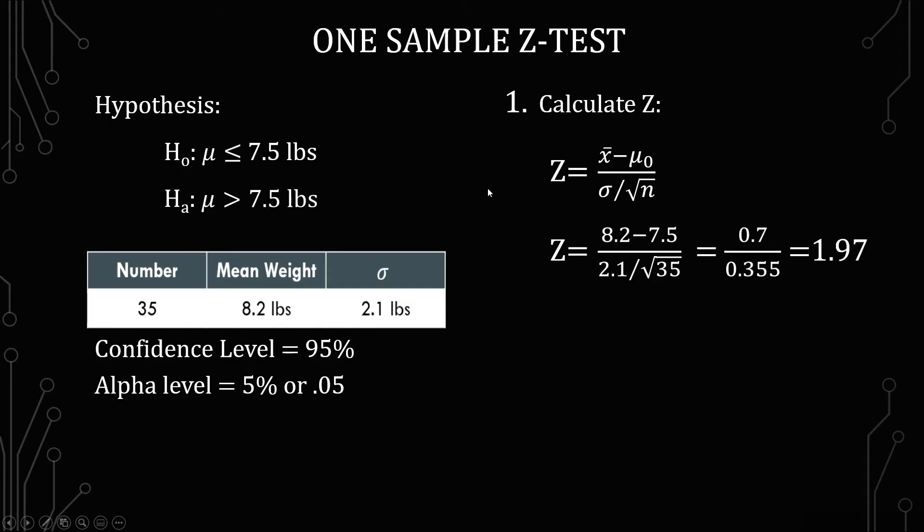So we have 8.2 because that's the mean weight, minus 7.5 because that's what the mu naught is. And then we have 2.1, which is the standard deviation here, divided by the square root of 35 because that's the number. And so you simplify, you get 0.7 over 0.355 or a z-value of 1.97.